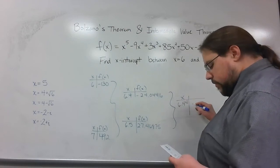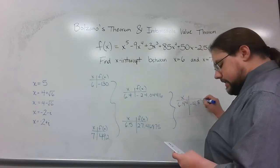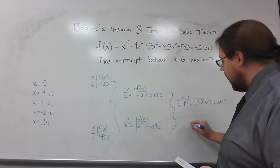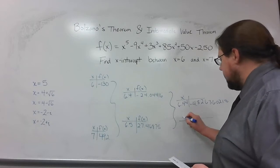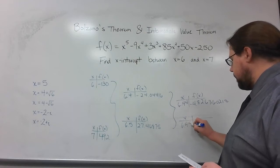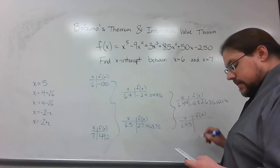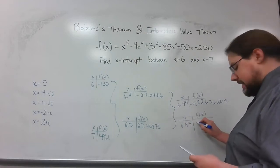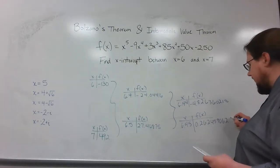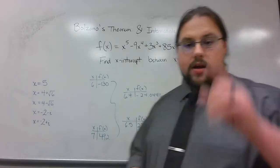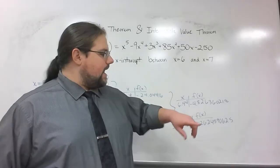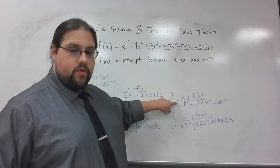When I plugged in 6.44, I got negative 4.826360218. When I plugged in the one right next to it, 6.45, I got 0.2624590625. Now, let me point out again, I got a negative number and I got a positive number. So my x-intercept has to be between 6.44 and 6.45.